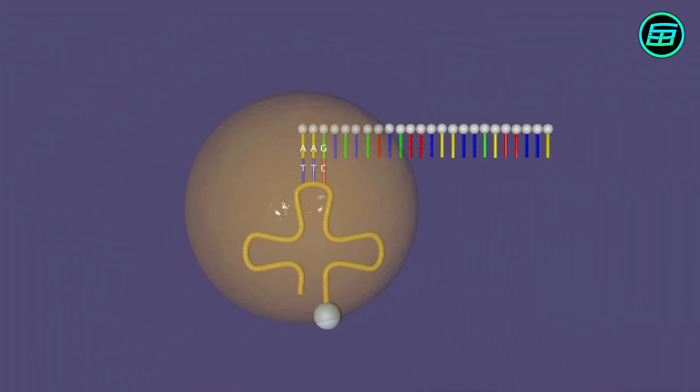Transfer RNA molecules carry amino acids to the ribosome. When a tRNA molecule binds to an mRNA, it releases its amino acid.